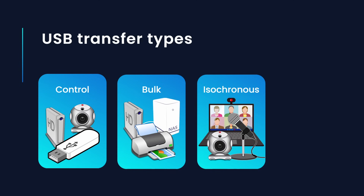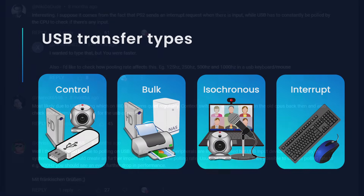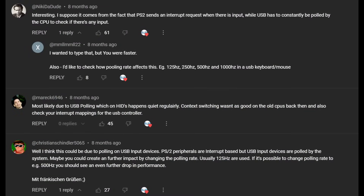The third type of transfers are isochronous transfers, which are used for real-time data transfer like streaming audio or video. Data is not guaranteed to make it through. And finally, there are interrupt transfers, which are used for devices that need periodic, low-latency communication. It is the primary transport method for USB keyboards and mice. Many viewers mentioned the polling mechanism to be the reason for the 2-4% performance loss observed in my tests.